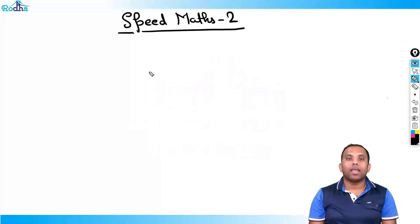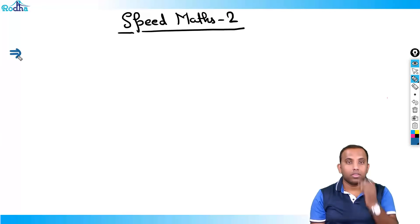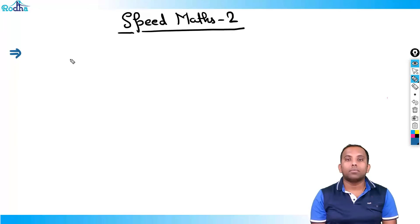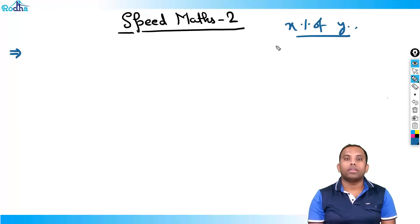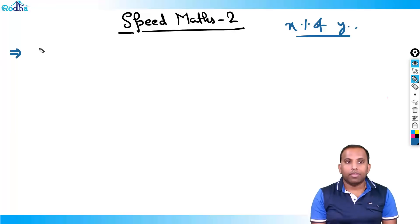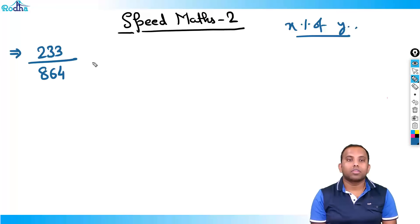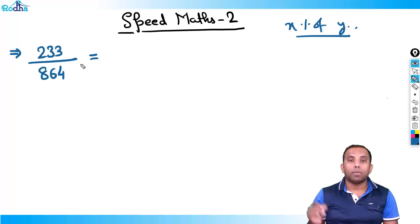Hi everyone, my name is Ravi Prakash and we are continuing Speed Math — this is the second class. In the last class we covered percentage approximations: how to calculate numbers of the form x% of y. In this class we'll see how to calculate fractions like 233 upon 864 within 10 seconds, by pure logical thinking — no formula.